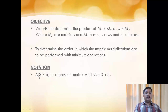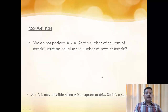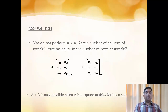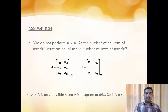For notation, A[3×5] will represent a matrix of size 3 cross 5. As a general assumption, we do not perform matrix multiplication of the same matrix because for matrix multiplication it is required that the columns of the first matrix be equal to the rows of the second matrix. A×A is only possible when A is a square matrix, which is a special case.